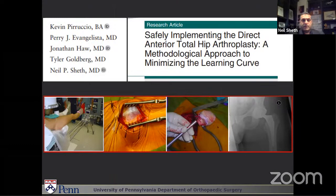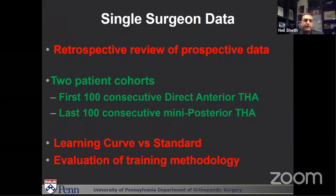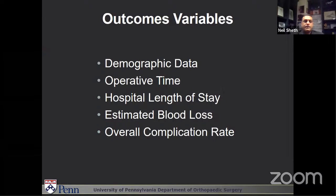We did some research and published an article in 2020 on how to safely implement the direct anterior approach and what methodological approach you can use to minimize your learning curve. We did a retrospective review of prospective data, looking at two patient cohorts: my first consecutive 100 direct anterior total hips compared to my last 100 consecutive mini-posterior total hips. At that point I'd already been seven years into practice and mini-posterior was my standard approach for most hip patients of normal body habitus and normal deformities. The outcome variables we looked at were demographic data, operative time, hospital length of stay, estimated blood loss, and overall complication rate.